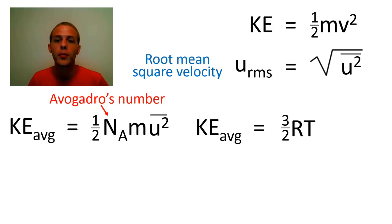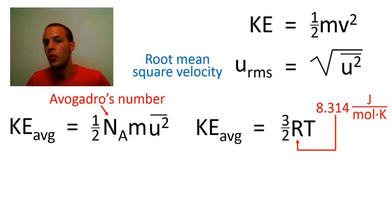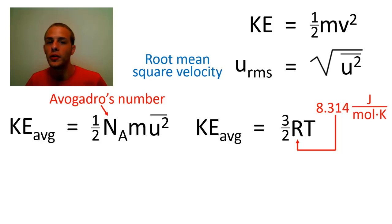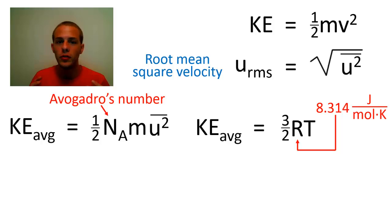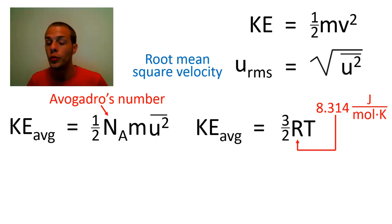The R here is the ideal gas constant, but in this equation it takes on different units. The value of R is 8.314 joules per mole per kelvin — that is, 8.314 joules over moles times kelvins.